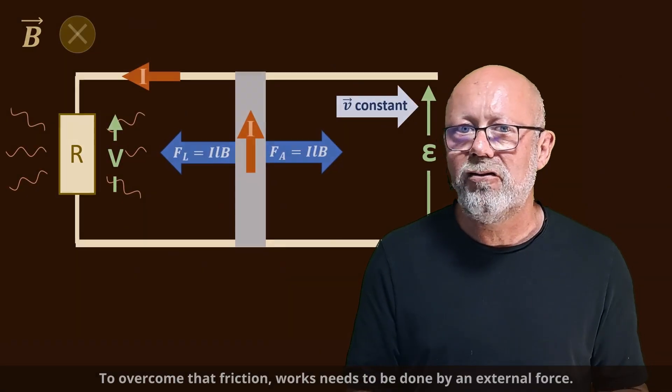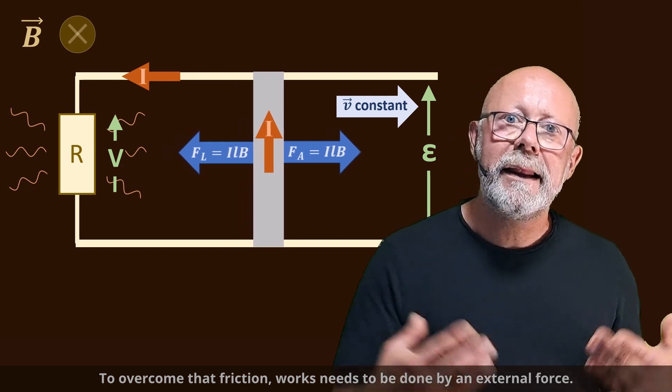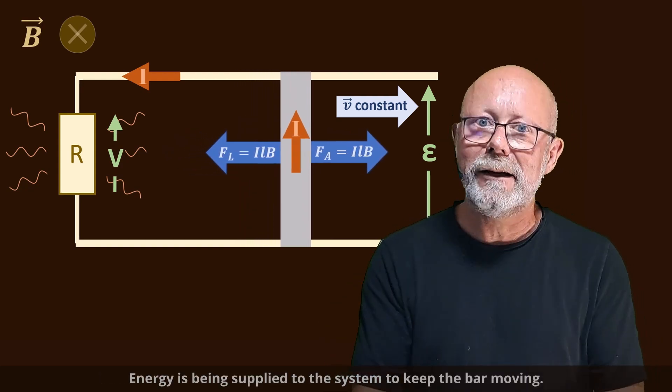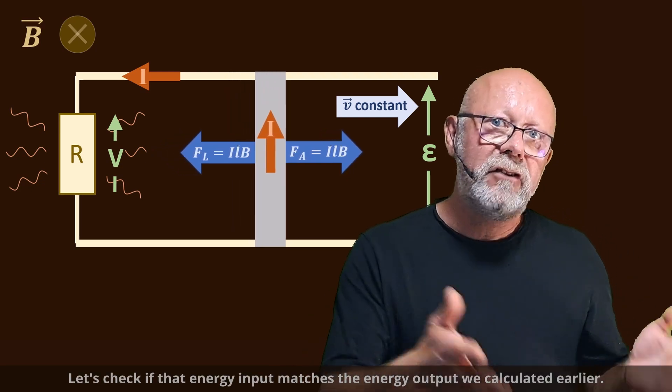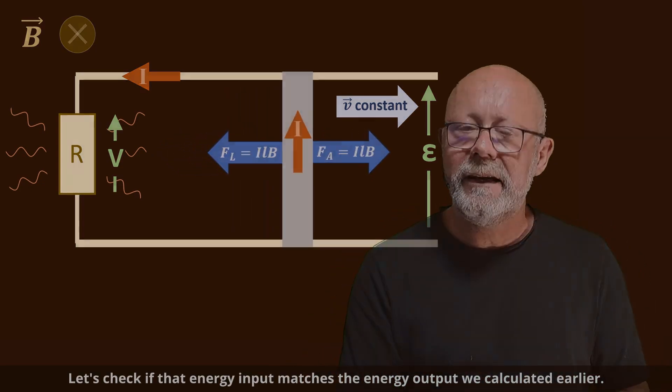To overcome that friction, work needs to be done by an external force. Energy is being supplied to the system to keep the bar moving. Let's check if that energy input matches the energy output that we calculated earlier.